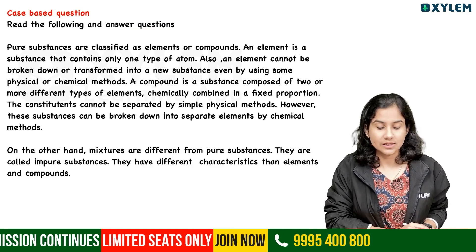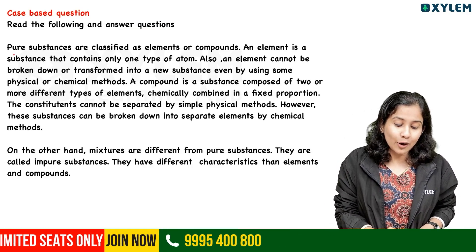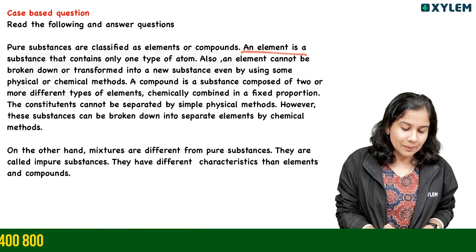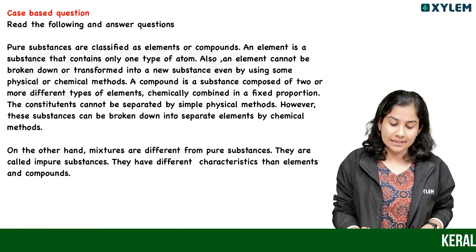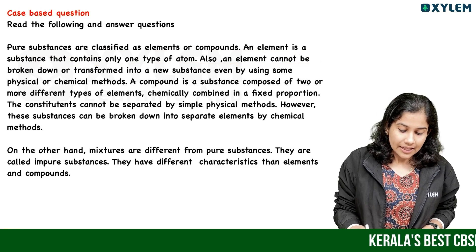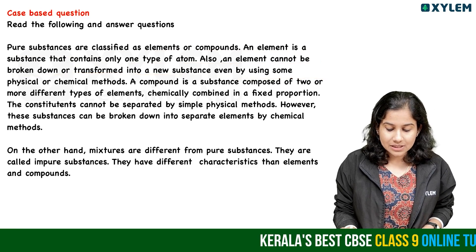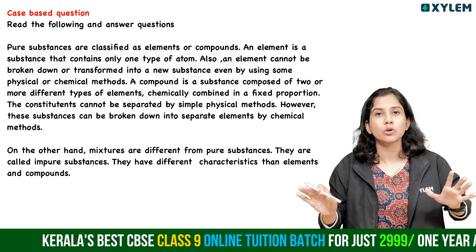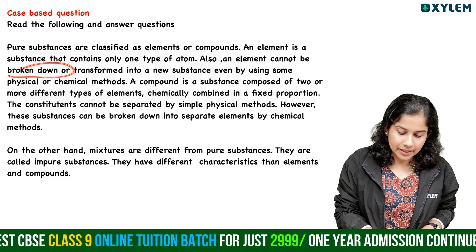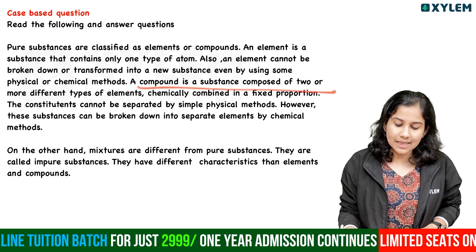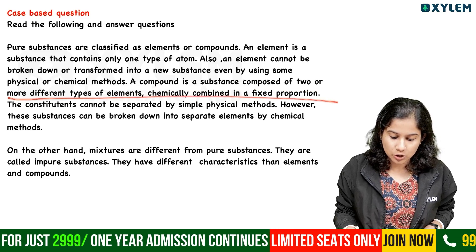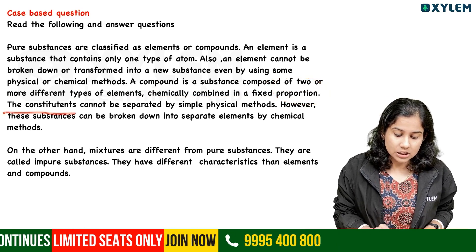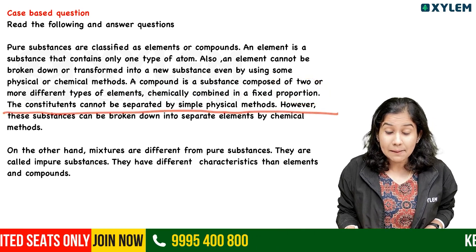Read the following and answer the questions. Pure substances are classified as elements and compounds. An element is a substance that contains only one type of atom and cannot be broken down or transformed into a new substance even by using chemical or physical methods. A compound is a substance composed of two or more different types of elements chemically combined in a fixed proportion. The constituents cannot be separated by simple physical methods.